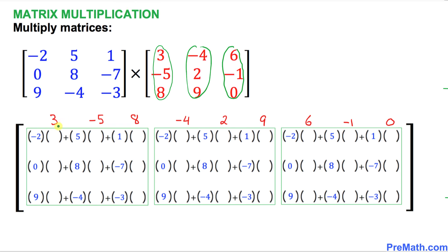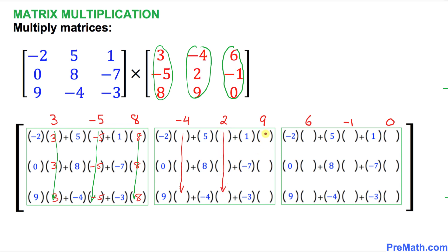Next, I want you to filter the value 3 all the way across, negative 5 filtered across here, and 8 all the way over here. That means these slots become 3, 3, 3; negative 5, negative 5, negative 5; and 8, 8, 8. Likewise, negative 4 goes across the board, then 2, then 9 all the way, then 6 all the way, then negative 1 likewise, and 0 in all remaining places.